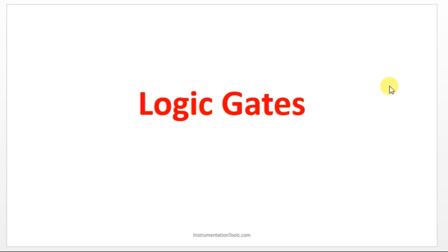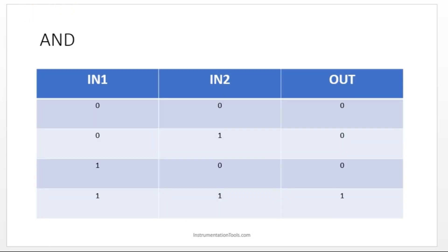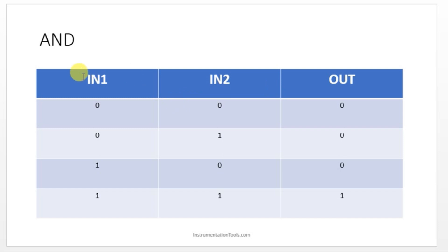We will see three logic gates in this section: AND, OR, and NOT. Let's start with the AND gate. We all know the truth table of the AND gate, and we are going to perform this logic in CX Programmer. Here we have two inputs and one output.